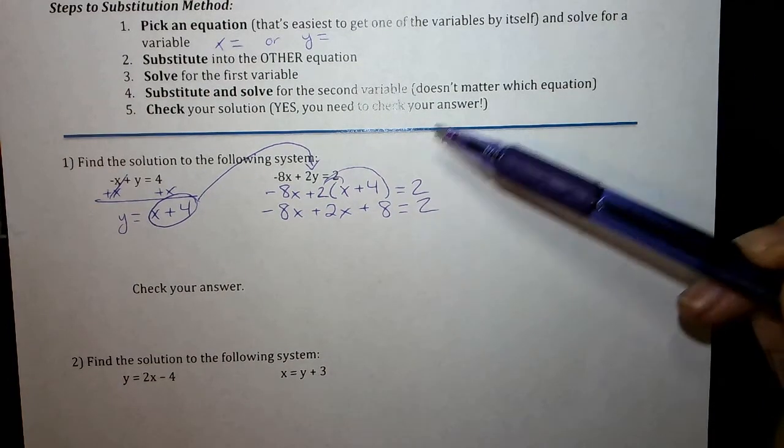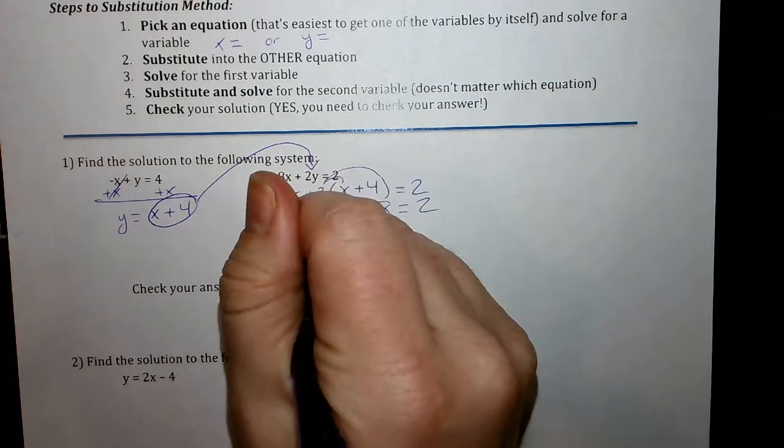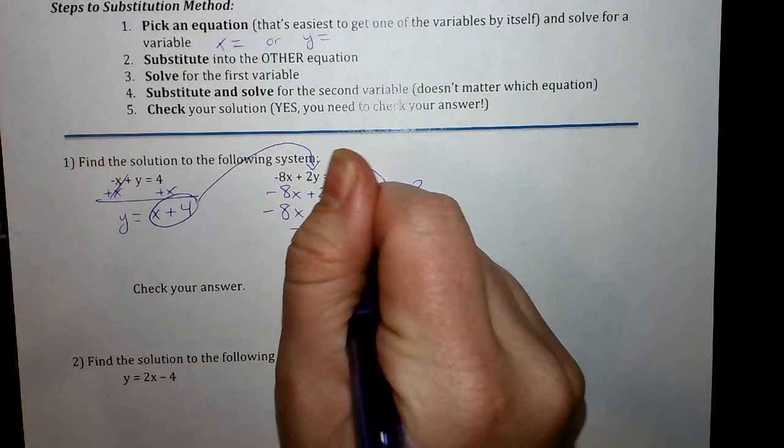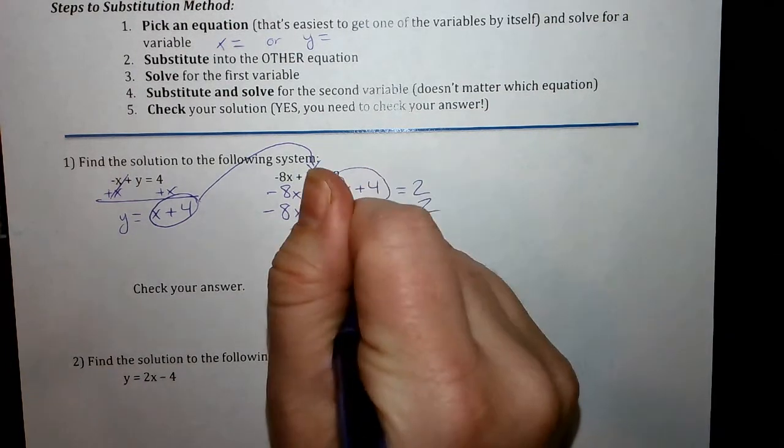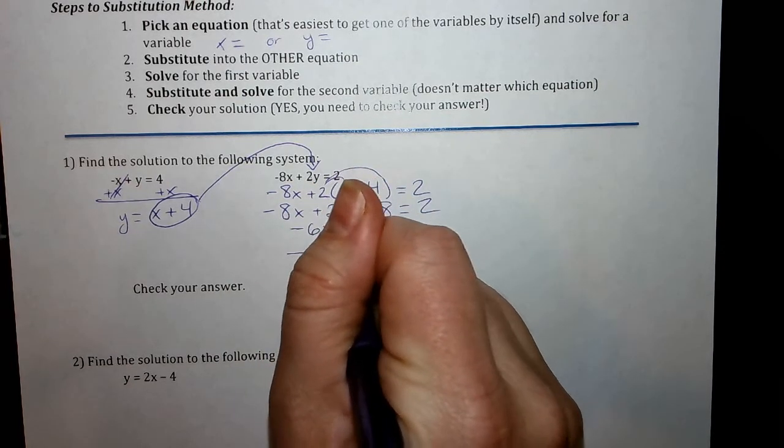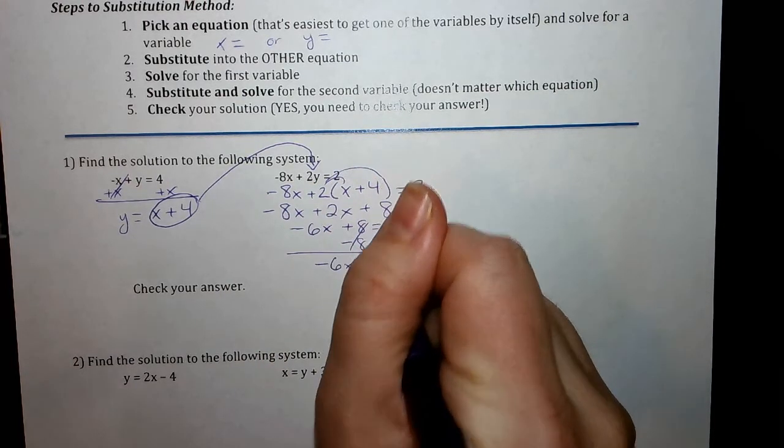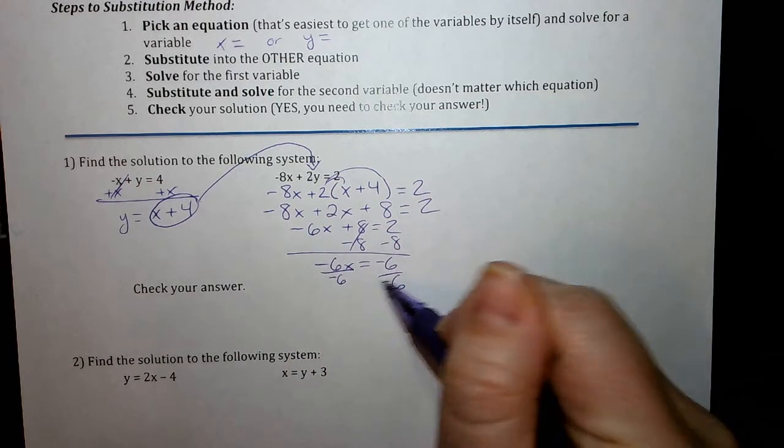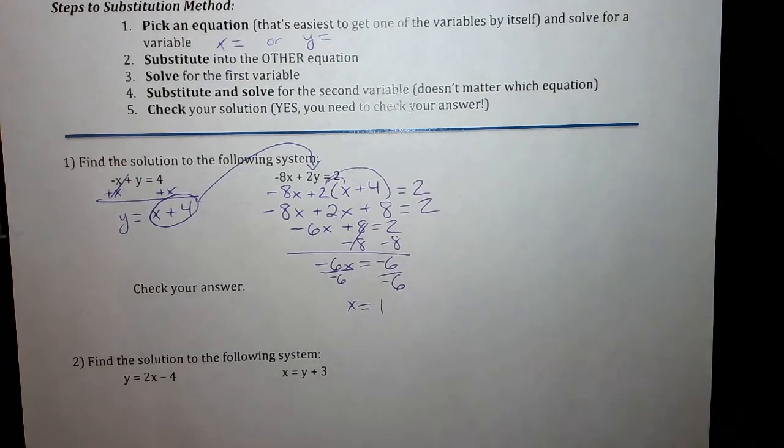And now to continue solving, I'm going to combine my like terms. Negative 8x plus 2x is negative 6x. I have to subtract the 8 to bring that over. So I get negative 6x equals negative 6. Divide by negative 6. So I get x equals 1. So I solve for the first variable. Step 3 is done.